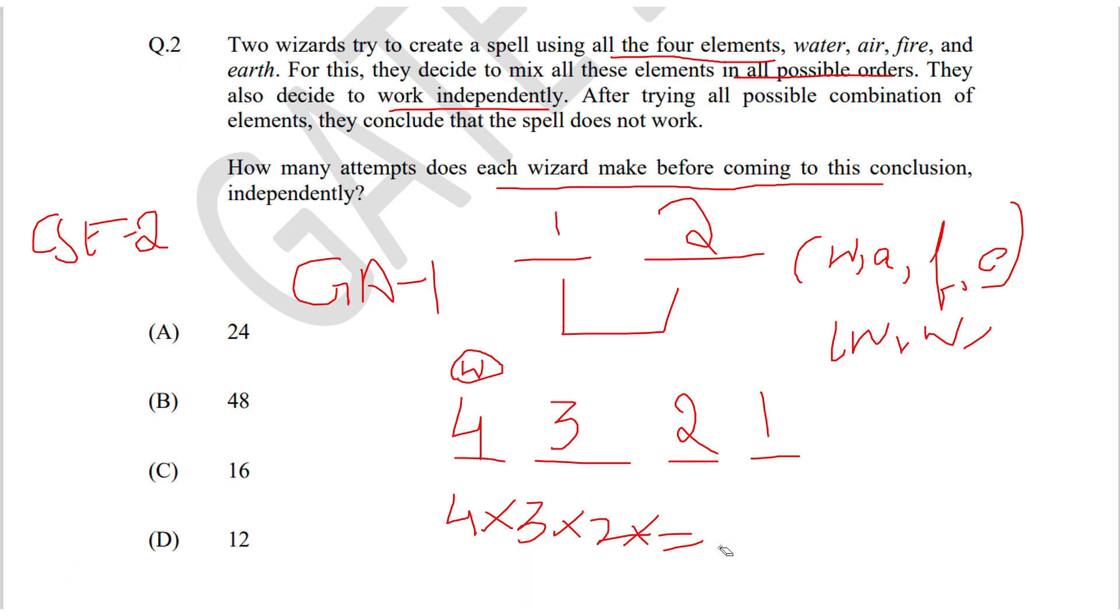Which is nothing but 24. Hence, the option is A, 24. Each wizard must undergo 24 combinations to check whether the spell works or not.